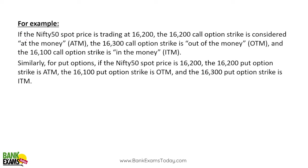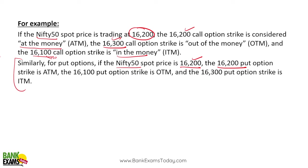Example: If Nifty 50 spot price is 16,200 — the 16,200 call option strike is at the money, the 16,300 call option is out of the money, and the 16,100 call option is in the money. Similarly for put options: 16,200 put is at the money, 16,100 put is out of the money, and 16,300 put is in the money.